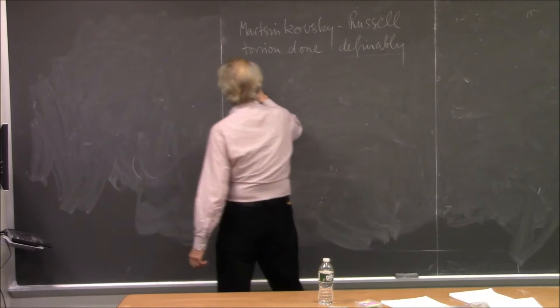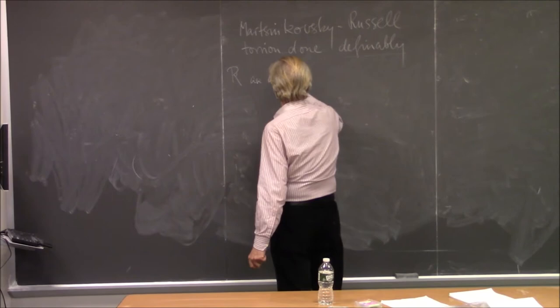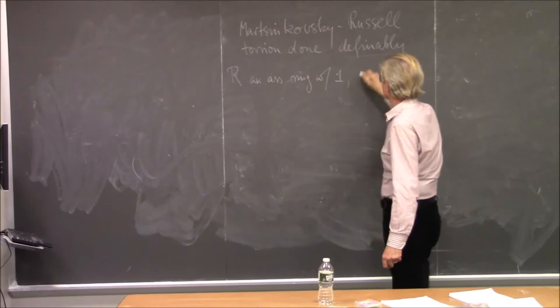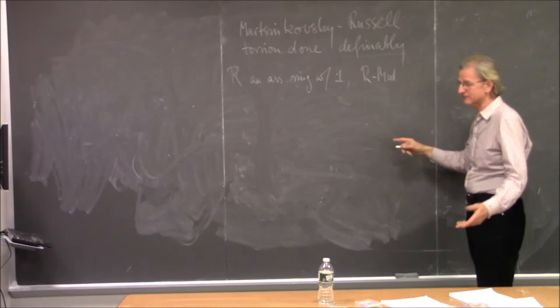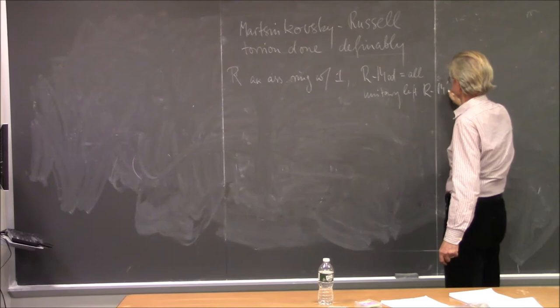We start with everything over a fixed ring — an associative ring with one. Modules are unital, and usually left, but I will also have right modules. So that's all unitary left R-modules, and then at some point I will need the same with the right.